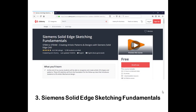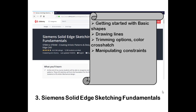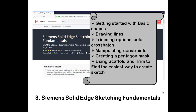The third course is Siemens Solid Edge Sketching Fundamentals, which is a different package compared to other commercial or free software available. Solid Edge is free to download and offered by Siemens. The course teaches basic shapes, how to draw lines, trim options, color hatching options, manipulating constraints, creating a pentagon, and finding the easiest way to create sketches. There are also quizzes, making it quite engaging.